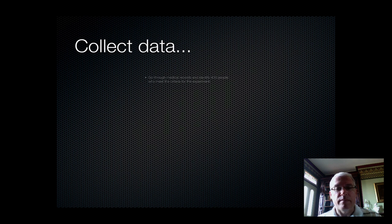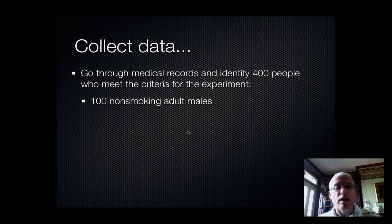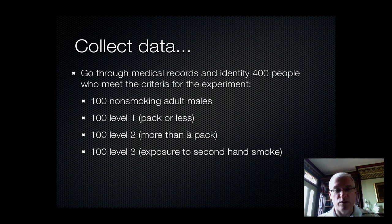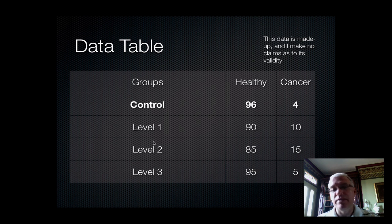Next, we're going to collect data. We're going to go through medical records and find 400 people who meet the criteria of the experiment — adult males — and also 100 adult males that have never been exposed to cigarette smoke. For a total of 400 people across our levels, we'll identify people that fit into either our control group or one of our three experimental groups. Note: this data was made up for the sake of this slideshow and is not scientifically valid.